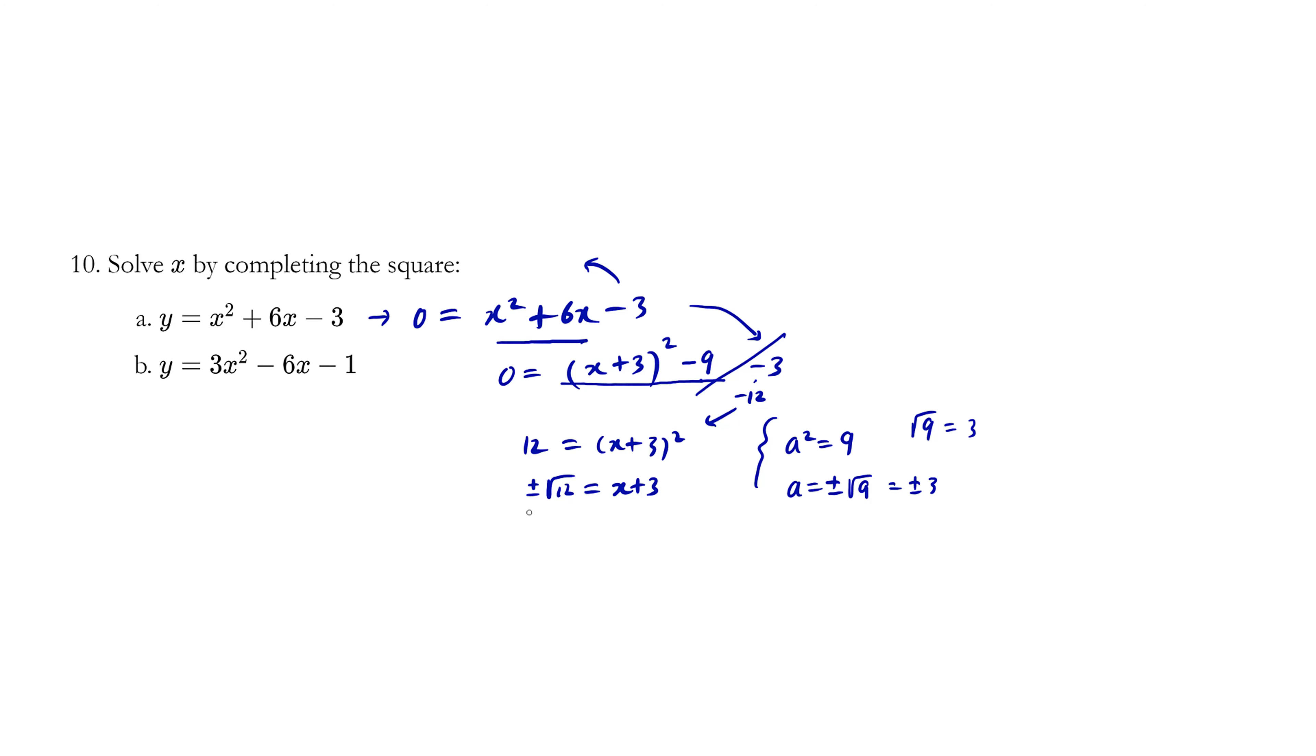So there we have it. Root 12 is the same thing as 2 times 6, or 2 times 2 times 3. One of these can escape jail. So this becomes plus minus 2 root 3. If you throw the 3 over here, it becomes a minus 3, and we have the value of x. This is the exact two possible values of x.